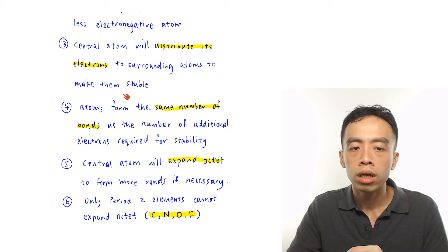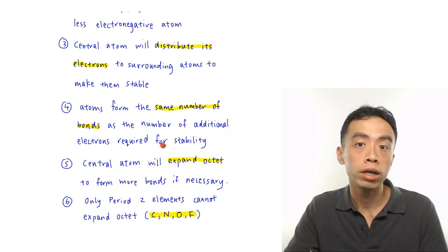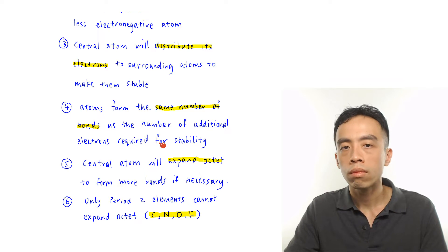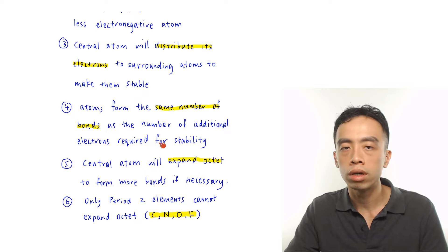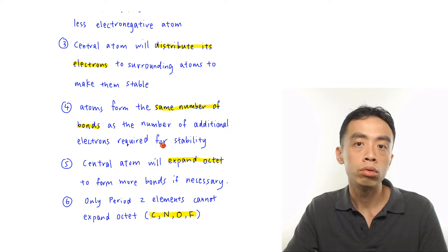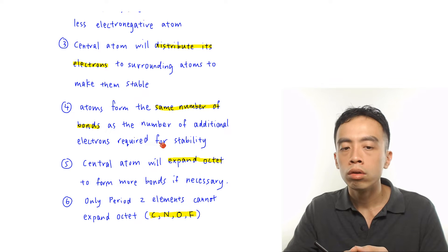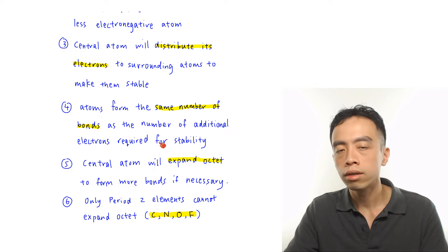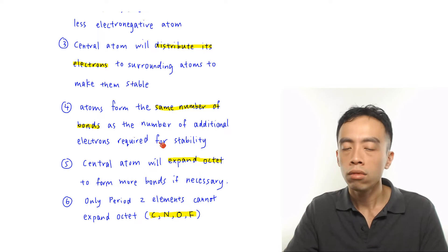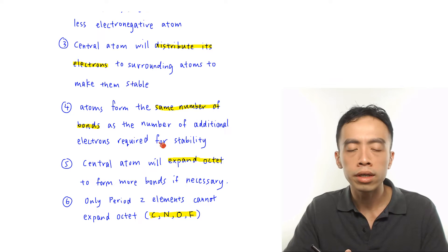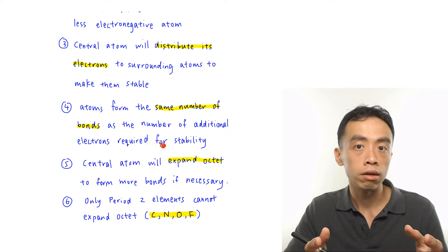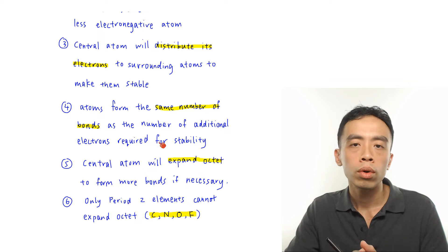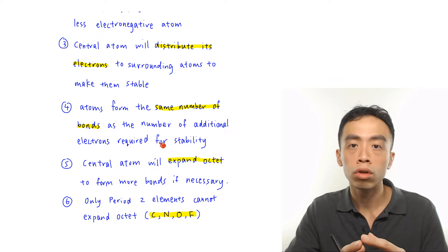Idea number four: the atoms will form the same number of bonds as the number of additional electrons required for stability. If I only need one electron to be stable or to achieve octet, I'll form one bond. Hydrogen and halogens tend to form only one bond. Oxygen is in group 16 with six valence electrons, needing two more to reach octet, so it tends to form two bonds. Nitrogen needs three electrons to be octet, tending to form three bonds. Carbon needs four electrons, tending to form four bonds. Based on which group an element is in, we can predict how many bonds it will form — it is not a random process.